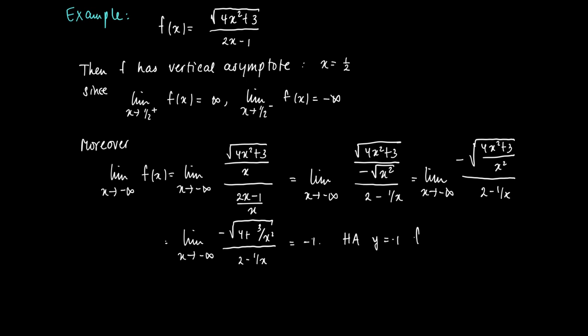So we find as a limit -√4 / 2 = -1. We have a horizontal asymptote at y = -1 for x going to minus infinity.